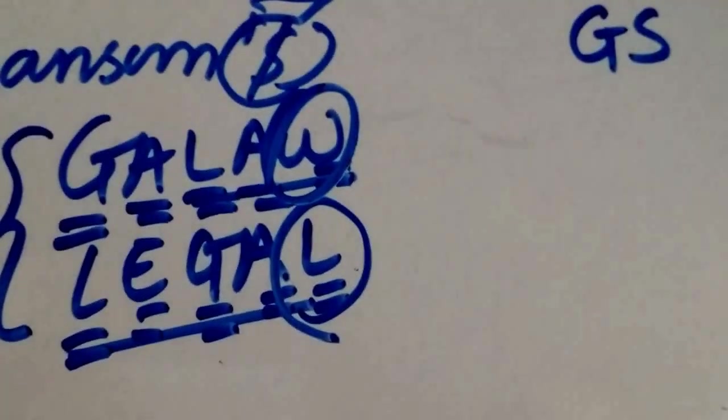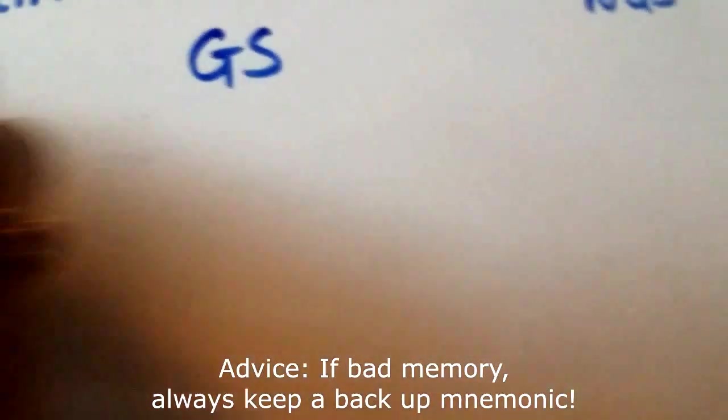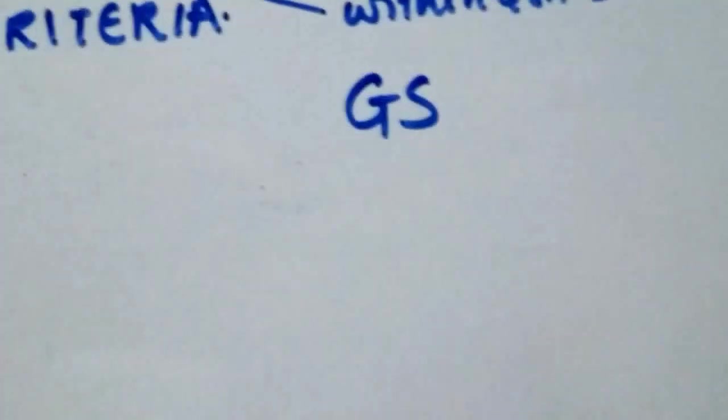Like once I totally forgot what the L stands for and then the other word kind of helped me out that maybe it's WBCs. I need two mnemonics for the same thing. That's how bad my memory is.